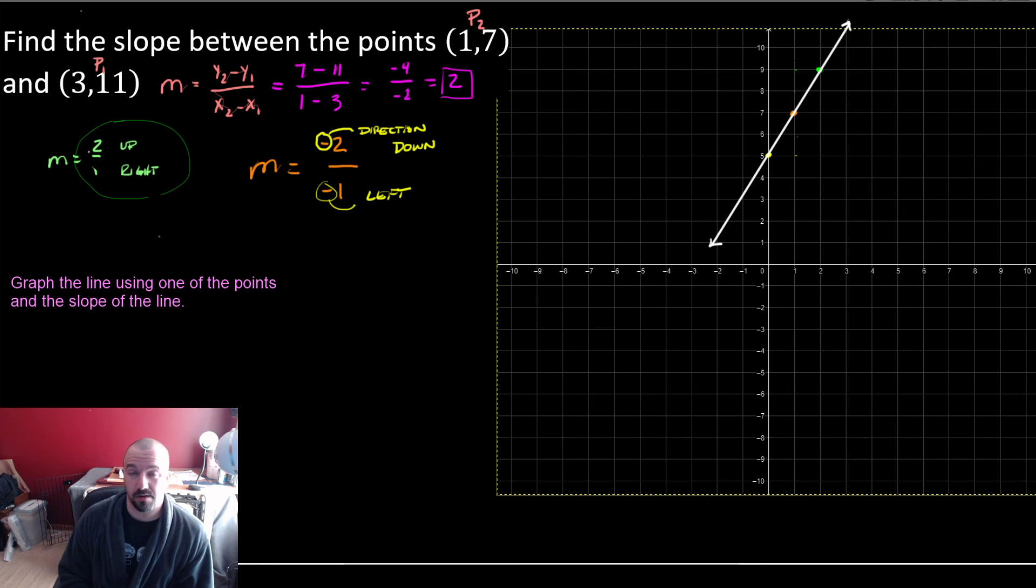So this is just one way that you can graph these. You could have just used the 2 points and graphed them that way. That's fine. Sometimes you'll be given the rate or the slope, and then you'll be given a starting point. And from there, you can actually graph the line and what it's going to look like. So just kind of keep that in mind. I hope this helps. Take care.